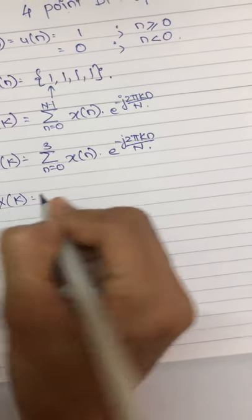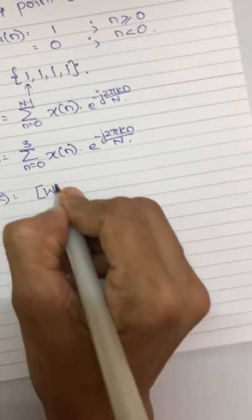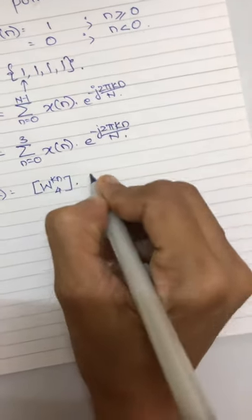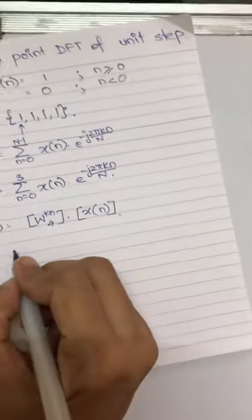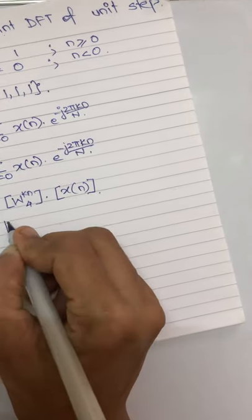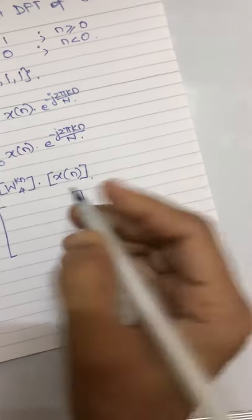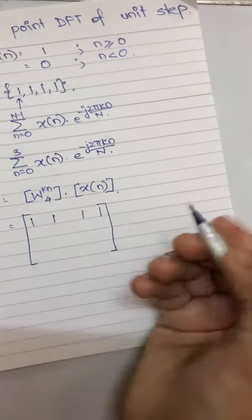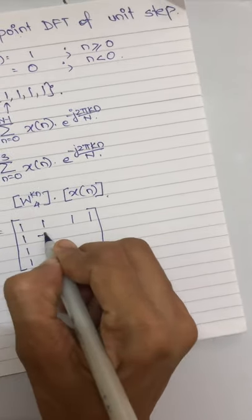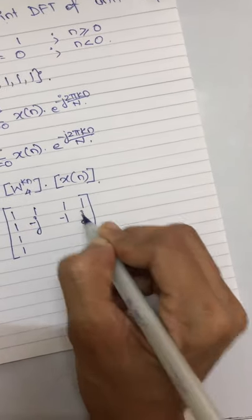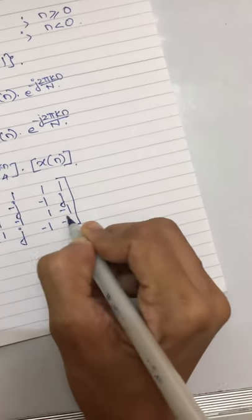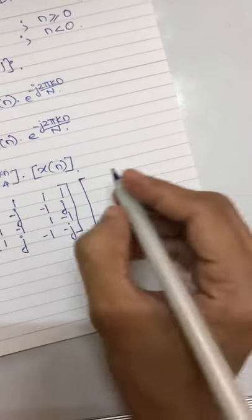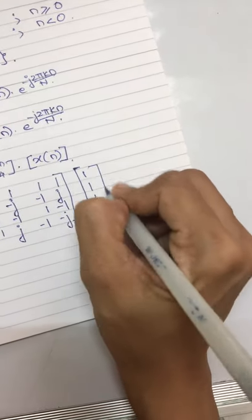Now we have already derived the Twiddle matrix, so we can use the Twiddle matrix, 4 by 4 Twiddle matrix to evaluate. So a 4 by 4 Twiddle matrix is 1, 1, 1, 1 in the first row. All of you please memorize the Twiddle matrix, it is very important.